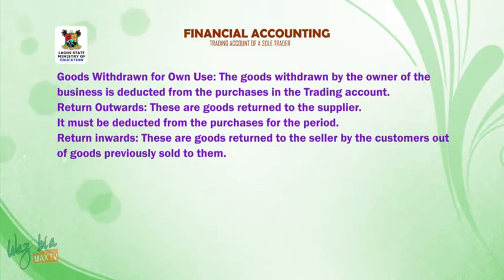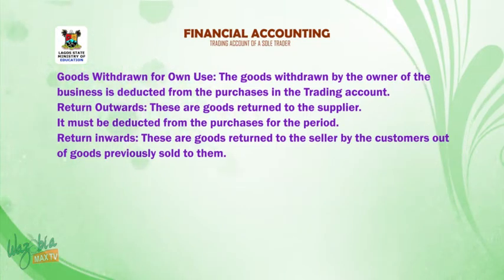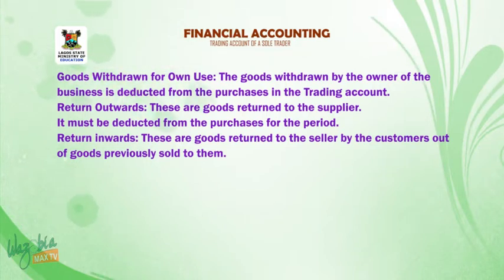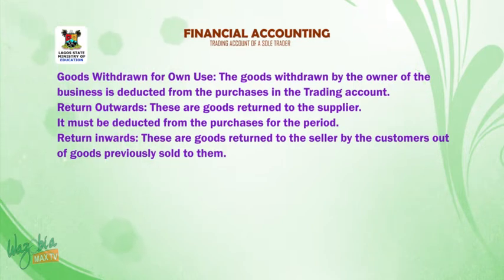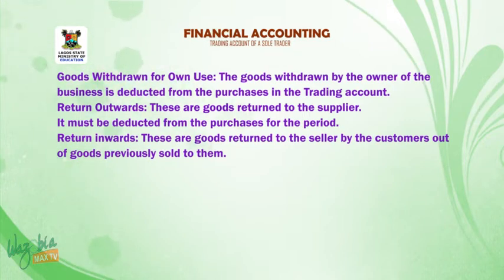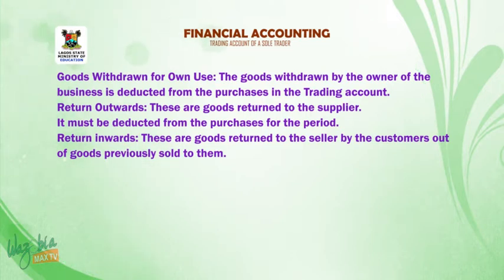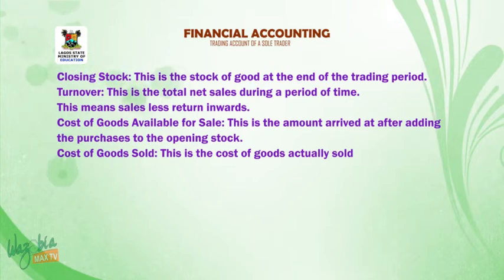Goods withdrawn for own use: the goods withdrawn by the owner of the business are deducted from the purchases in the trading account. Return outwards: these are goods returned to the suppliers and must be deducted from the purchases for the period. Return inwards: these are goods returned to the seller by the customers out of goods previously sold to them. Closing stock: this is the stock of goods at the end of the trading period.